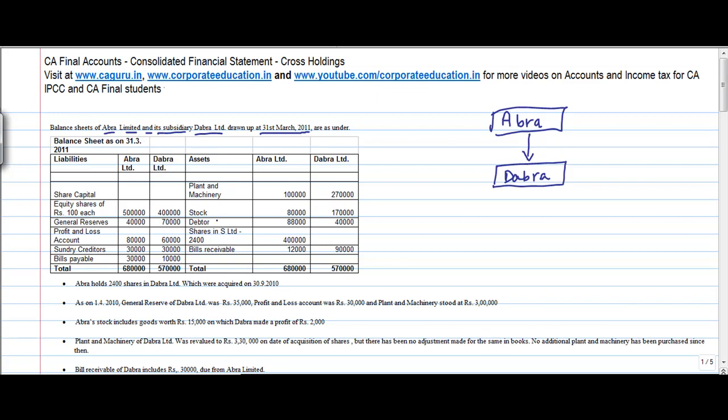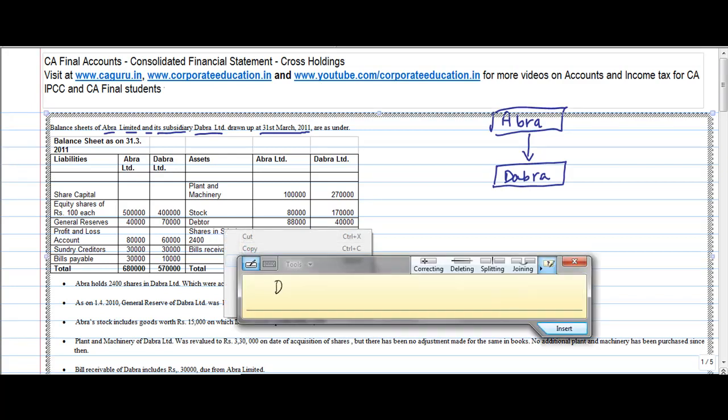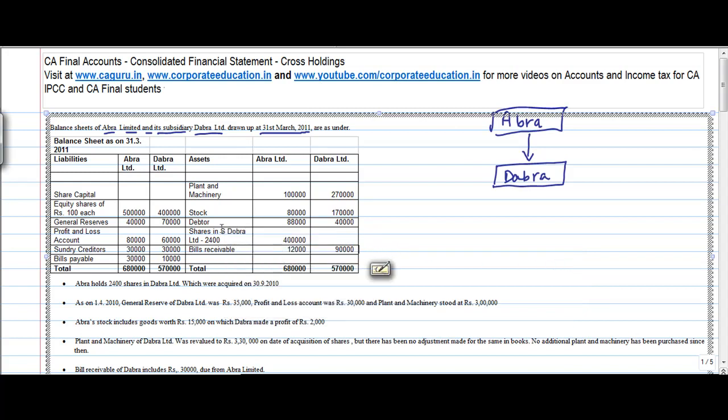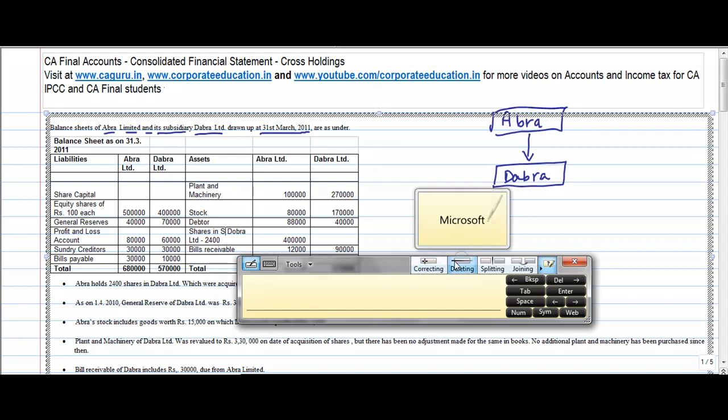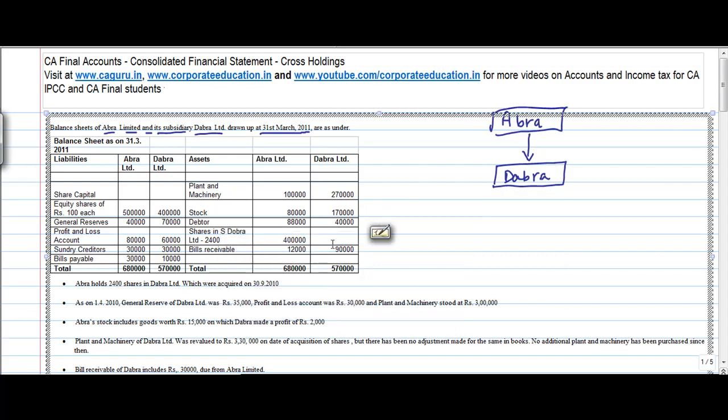What we are told is that Abra is the holding company of Dabra or Dabra is the subsidiary of Abra. So you have plant and machinery, stock, debtors, share in S Limited. This S is actually Dabra Limited.